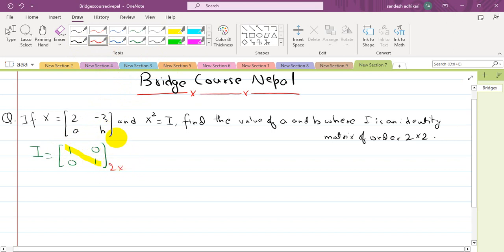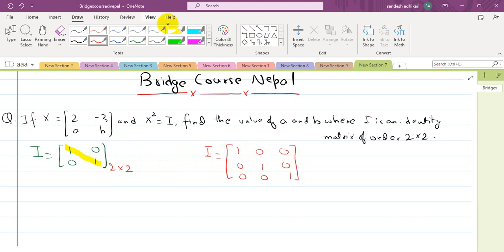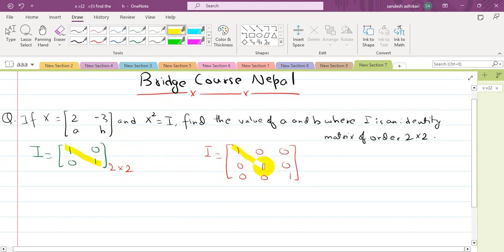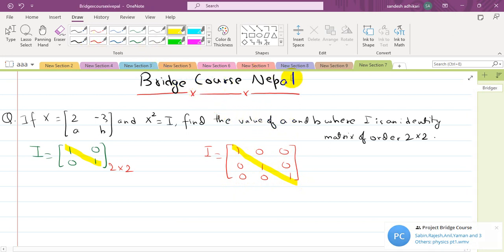For 2×2 order, the identity matrix is [1, 0; 0, 1]. Similarly, for 3×3 it would be [1, 0, 0; 0, 1, 0; 0, 0, 1]. In this case we're dealing with 2×2 identity matrix.